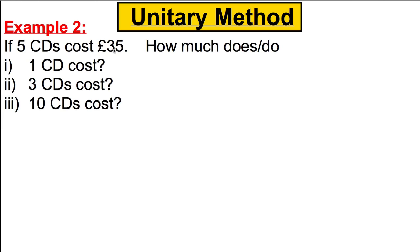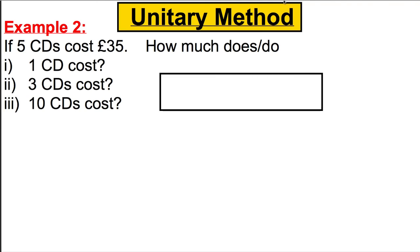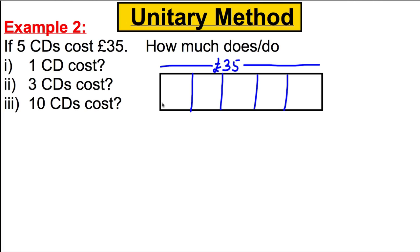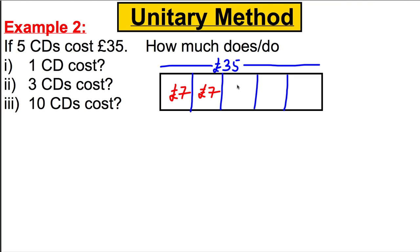Example two — write this down. Five CDs cost thirty-five pounds. How much are one CD, three CDs, and ten CDs? The first thing we're going to do is draw a picture. The whole lot is thirty-five pounds and there are five CDs, so we split into five. What equal number must go in each box to add up to 35?